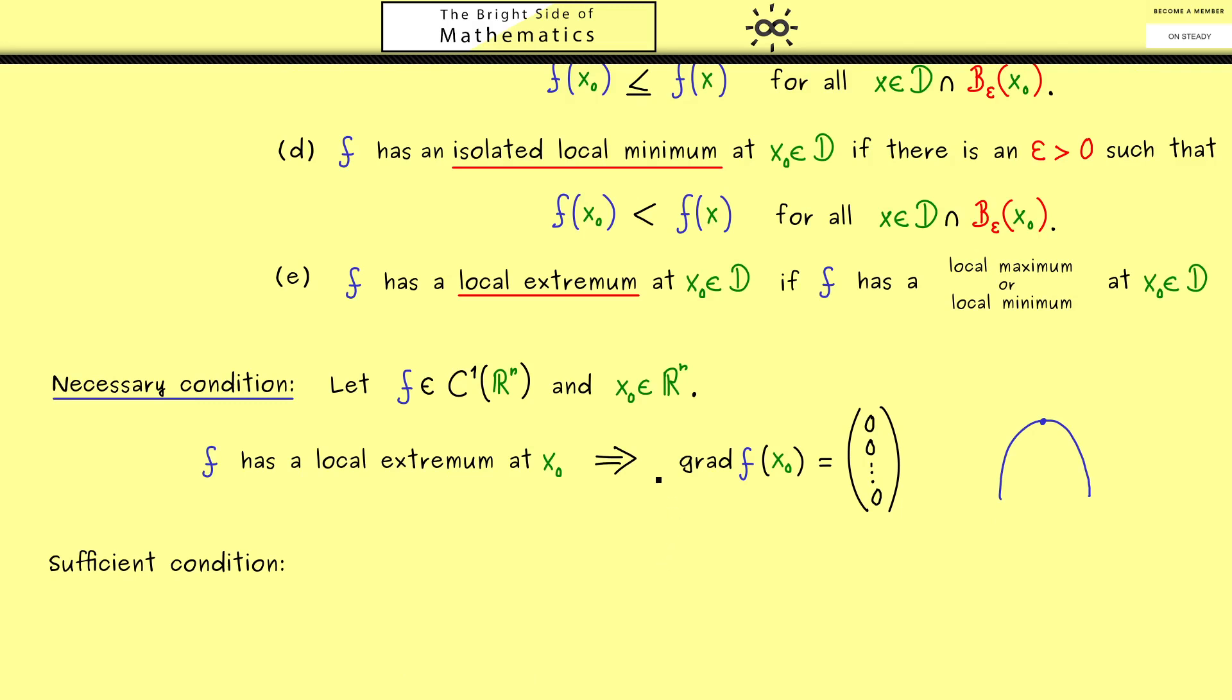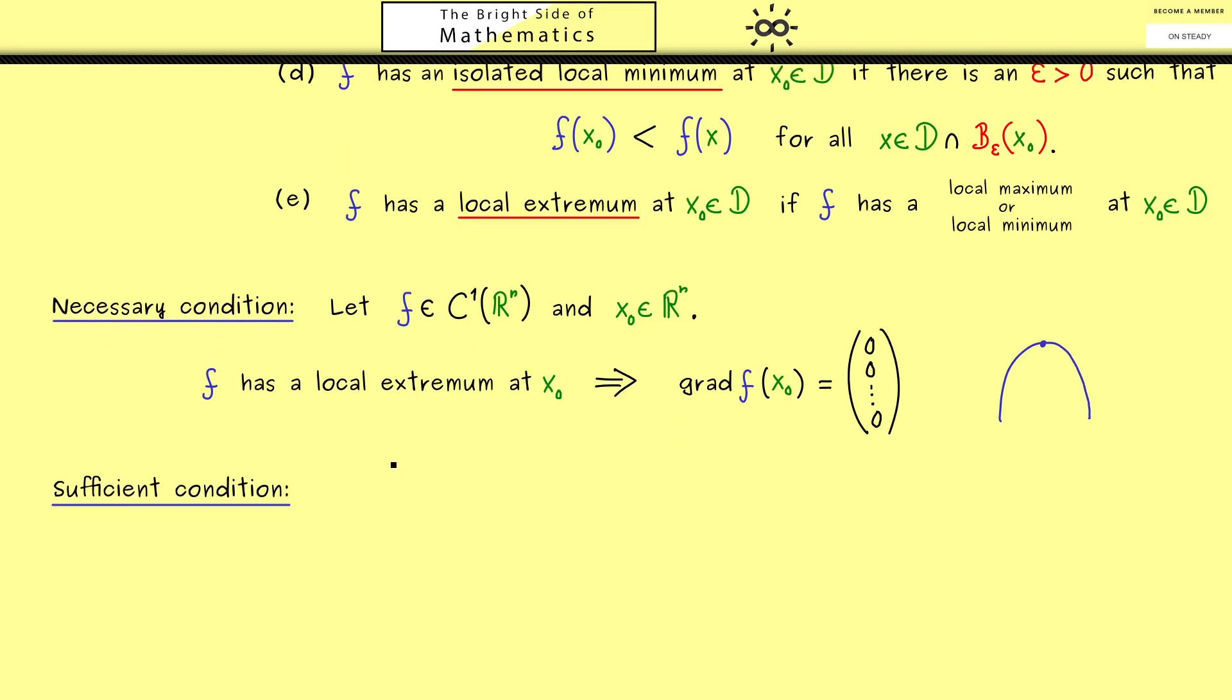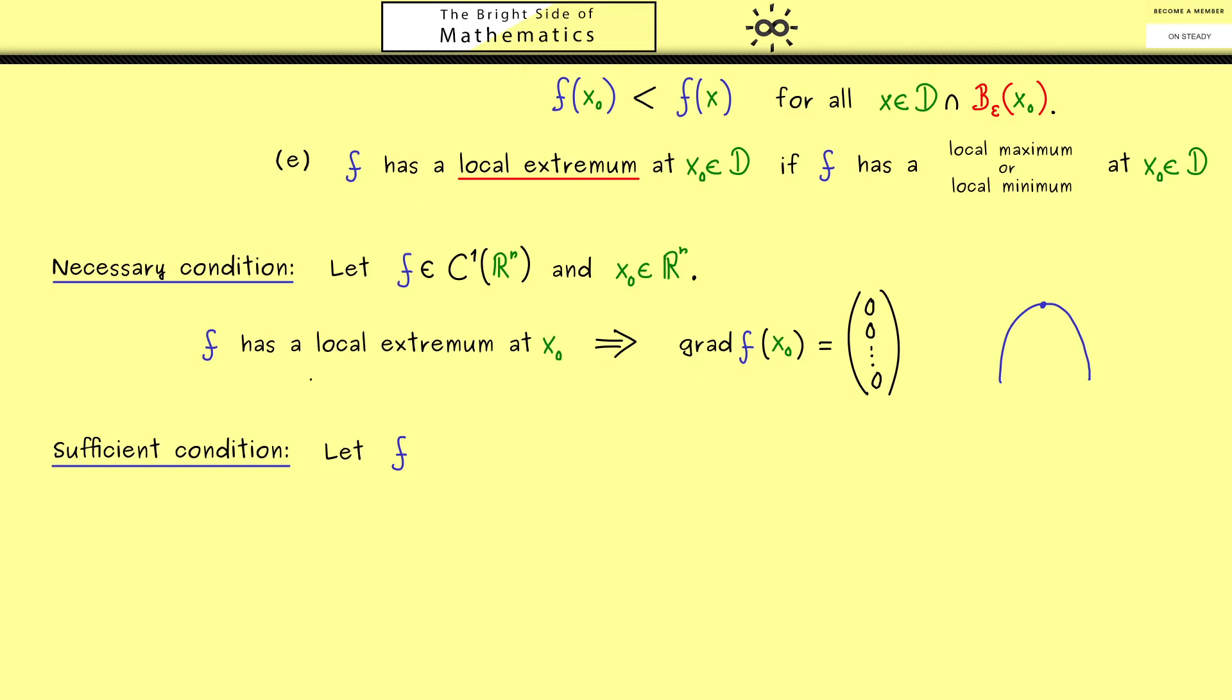Also helpful here to understand this is the sentence that the gradient describes the direction with the fastest increase. Obviously, if we are at a local extremum, there should be no direction with an increase. So in summary, you should see here we can just redo the proof from real analysis. However, from the one-dimensional case we also know that this fact here, this criterion, is not sufficient for having a local extremum. But for example, we know that together with the second derivative we can get sufficient conditions.